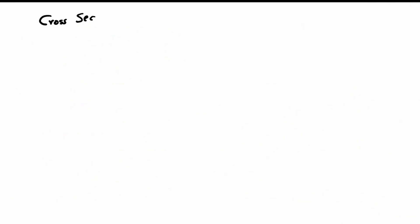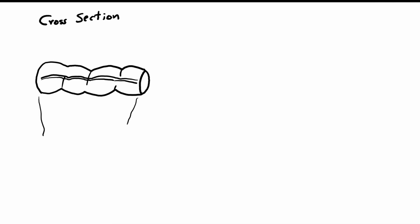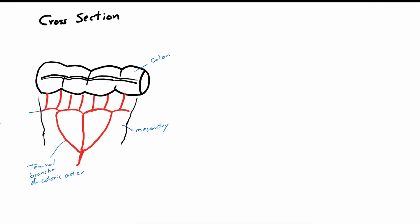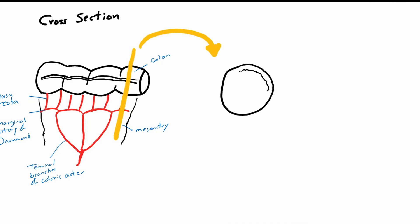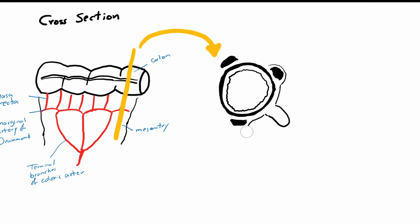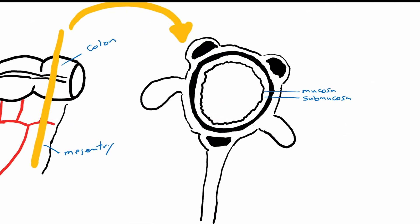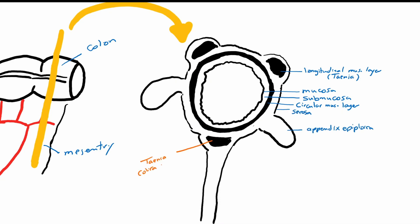Now we will take a cross-section of the colon. Here we can see the colon with the teniae coli, the terminal branch of a colonic artery such as the left colic artery, the marginal artery of Drummond, and the vasa recta in the mesentery. The layers of the colon are: mucosa, submucosa, circular muscular layer, and the longitudinal muscular layer which forms the teniae coli, the serosa, and the appendices epiploicae — fat appendages attached to the colon. The three teniae are: the teniae mesocolica at the mesenteric side, the teniae omentalis at the attachment of the greater omentum, and the teniae libera seen freely on the visible surface of the colon.